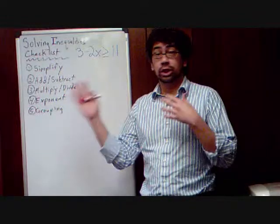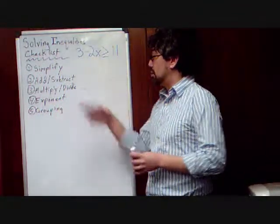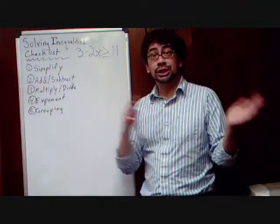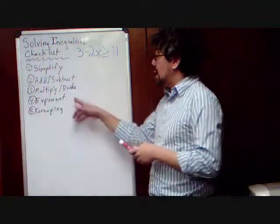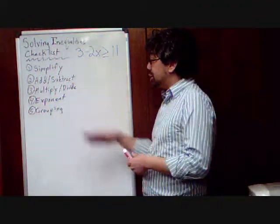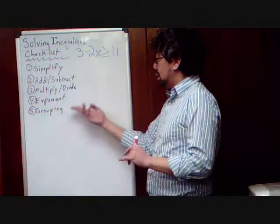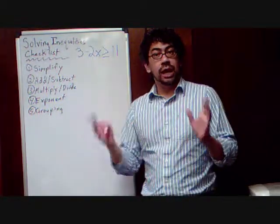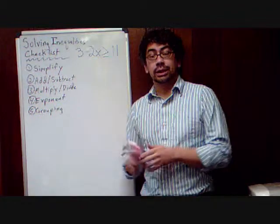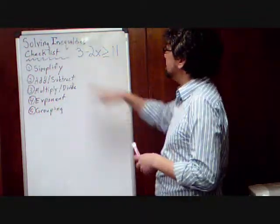Simplify on one side of the inequality symbol. Add or subtract. We're going to start moving sides using opposite operations. Multiply and divide. Again, opposite operations, opposite sides. Exponents. We're again going to do inverse operations. Now, what that looks like, we'll get to in later sections. Grouping. We're then finally going to deal with grouping symbols. Again, we'll get to what that looks like in later sections.